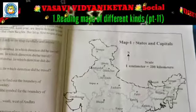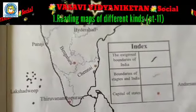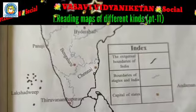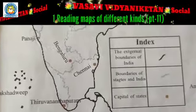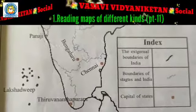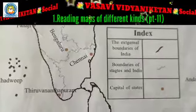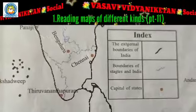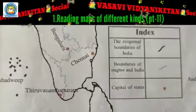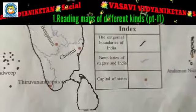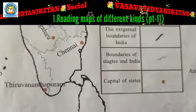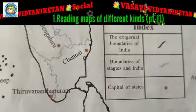These are the states and capitals of India. In the index, the external boundaries of India — what is the symbol? Thick black in colour. Next, boundaries of states within India — we locate them like this. Next, capital of states — we will put the mark like this.